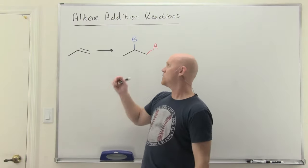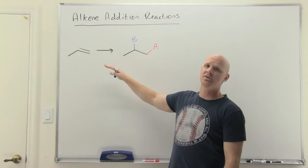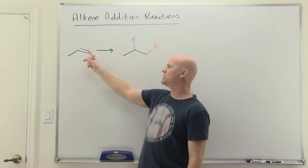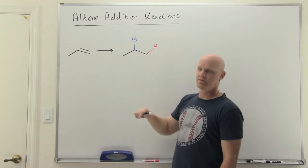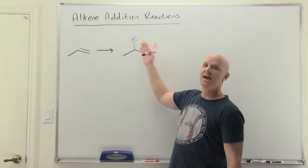Alright, so to start this off, we've just got to take a look at the anatomy of an alkene addition reaction. So in an alkene, we're going to be trading a pi bond for two new sigma bonds. So in this case, I've just got them labeled A and B.